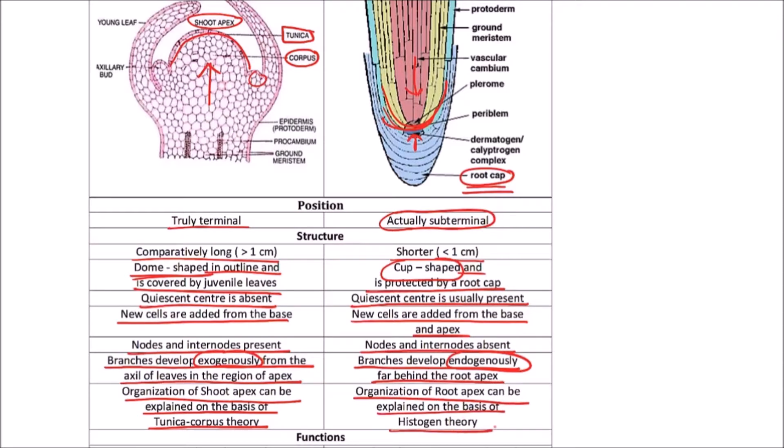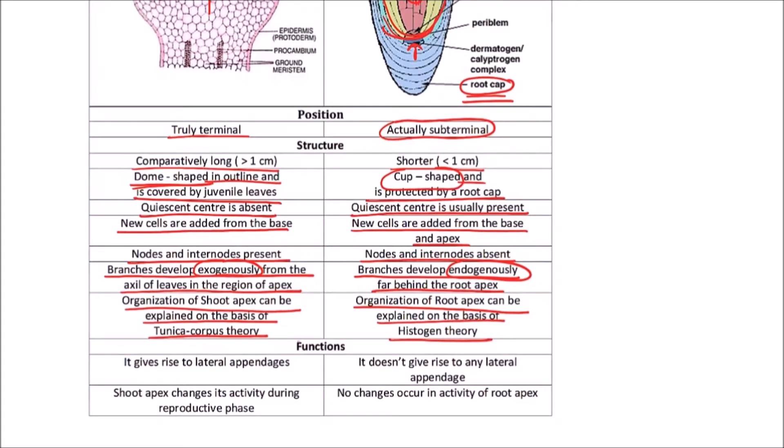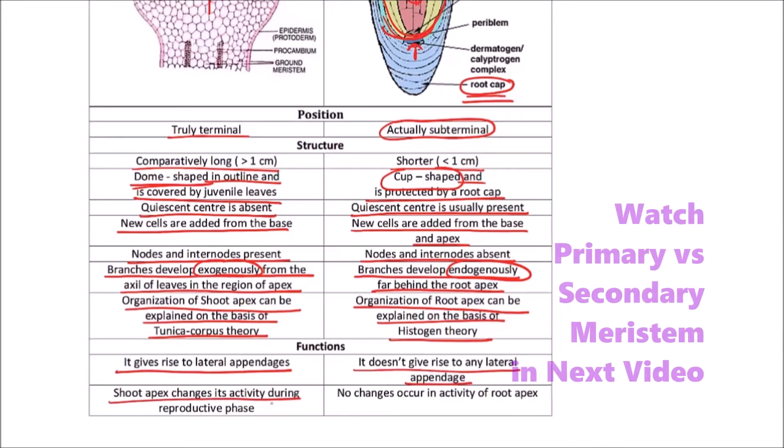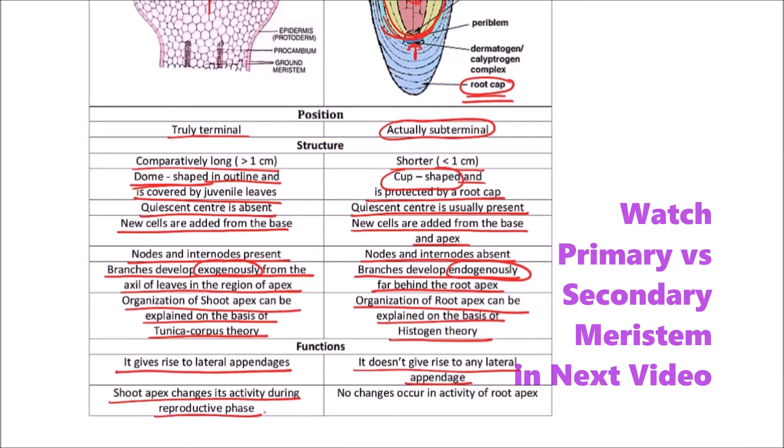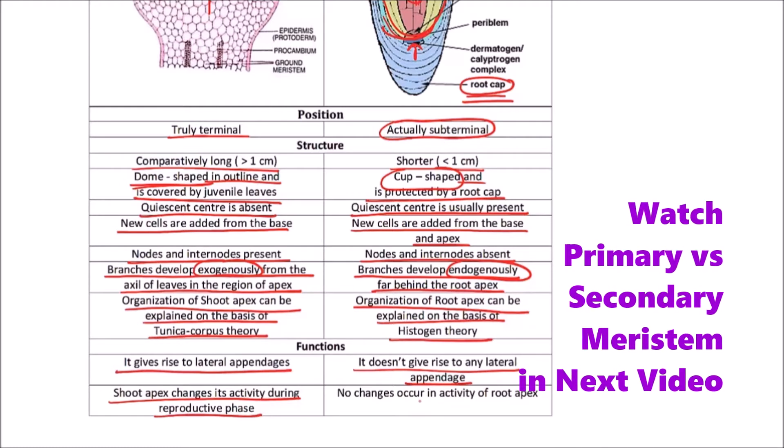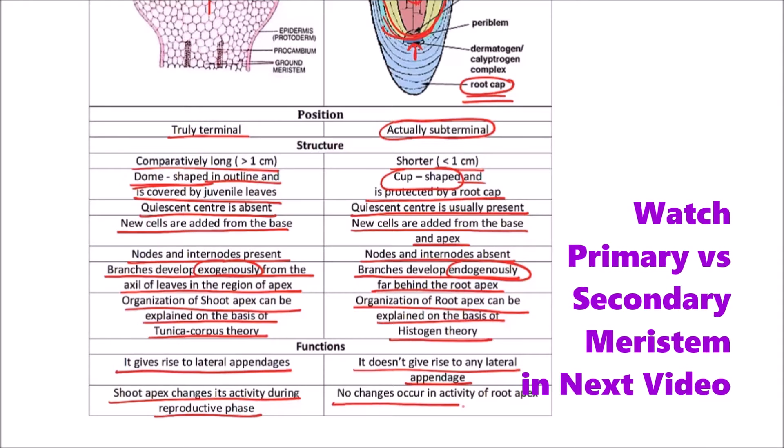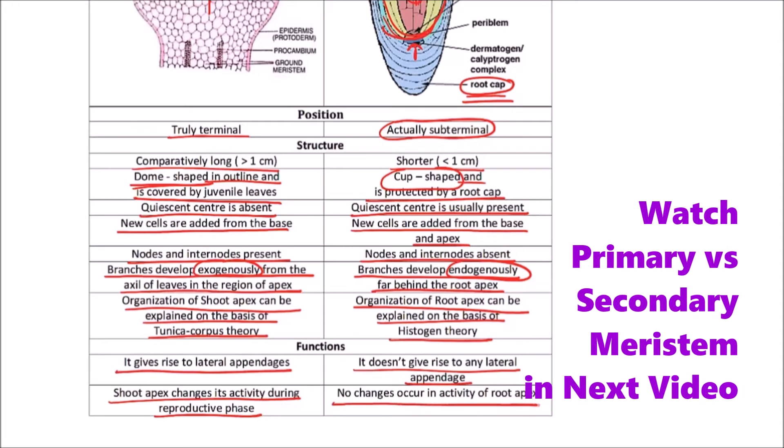Regarding function, the shoot apex gives rise to lateral appendages, while the root apex does not give rise to any lateral appendages. The shoot apex changes its activity during the reproductive phase because it may develop into flowers and the floral axis, but the root apex doesn't show any change in activity.